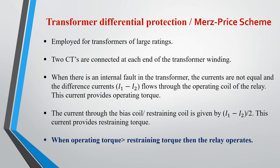The Merz-Price scheme is employed for transformers of large ratings. As the name suggests, differential protection responds to the vector difference between two similar actuating quantities. Two CTs are connected at each end of the transformer winding. Pilot wires are connected between the CTs. Biased coils are also present in series with the pilot wires to avoid unwanted operation. When an internal fault occurs, the currents are not equal and the difference current flows to the operating coil of the relay, providing the operating torque.